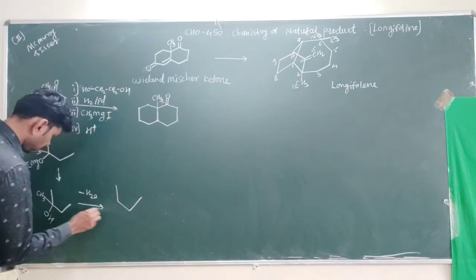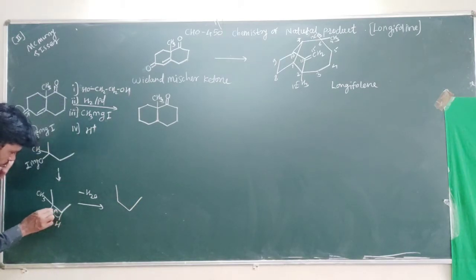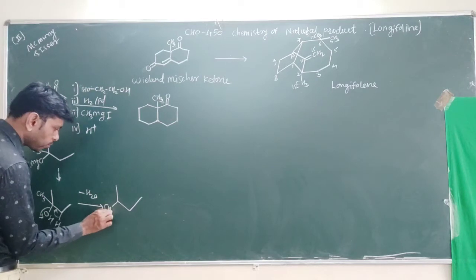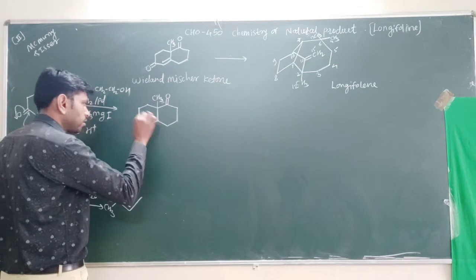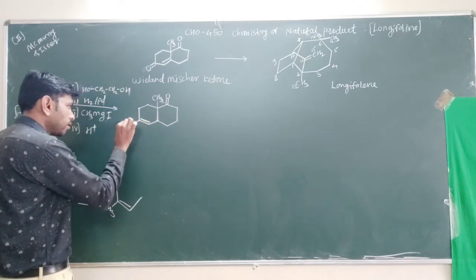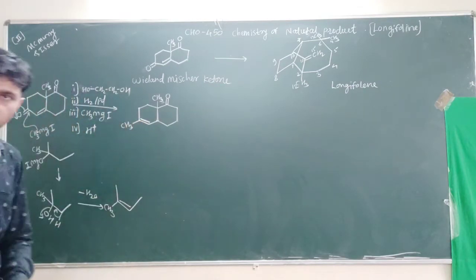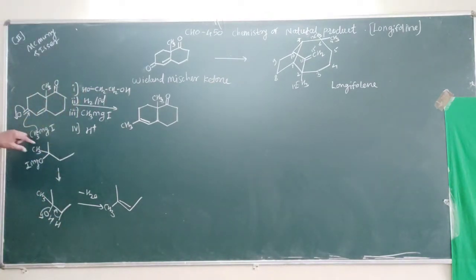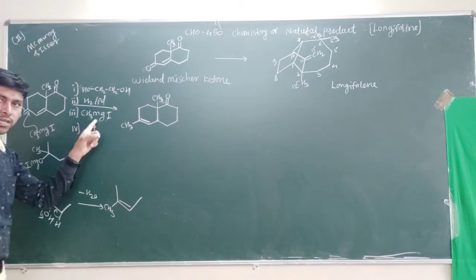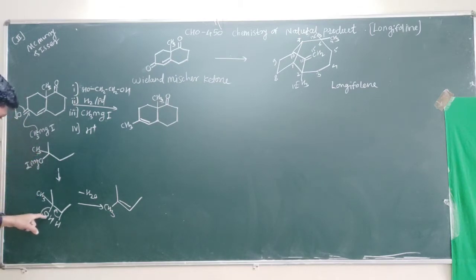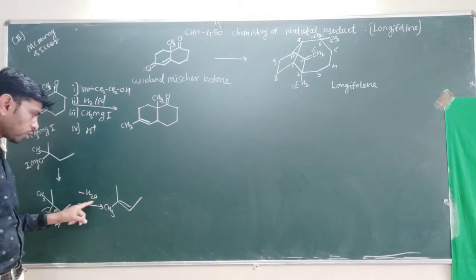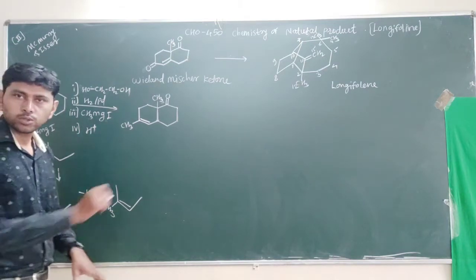The CH3MgBr attacks the carbonyl group. Here the OMgBr is formed, attachment of CH3 occurs, and then the OMgBr converts to OH. Removal of the water molecule gives us this molecule. So this completes the first set of steps in which these reagents have been applied.